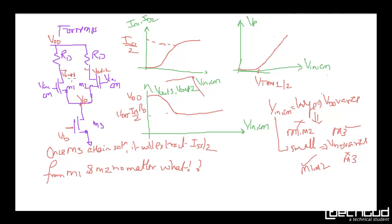Looking at these figures, the current flowing through one path is Id1, and through the other is Id2, and the total current is Id, or ISS. When Vincommon mode is less than threshold voltage, Vgs must be greater than Vth for current to flow. M1 and M2 will not pass current when Vincommon mode is less than Vth, so no current flows until threshold is crossed.